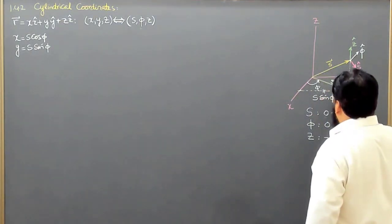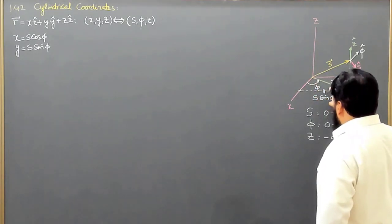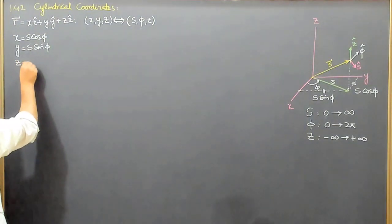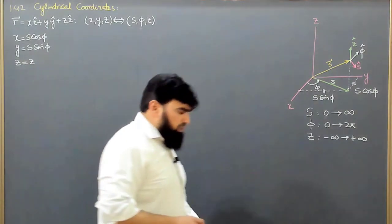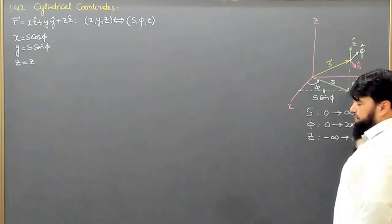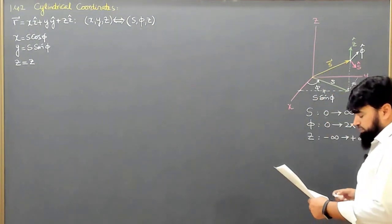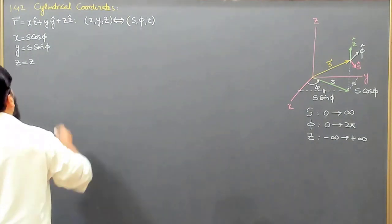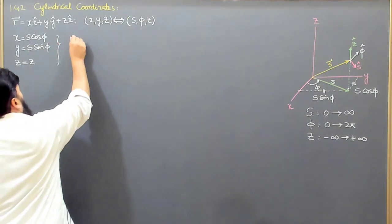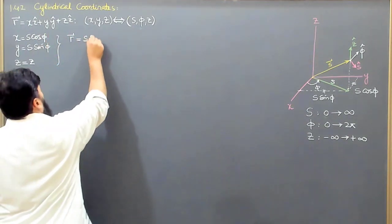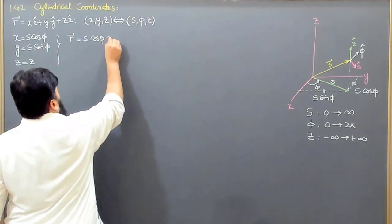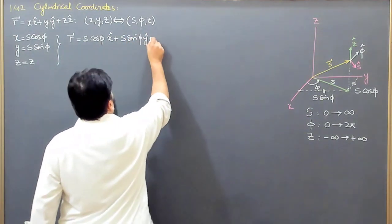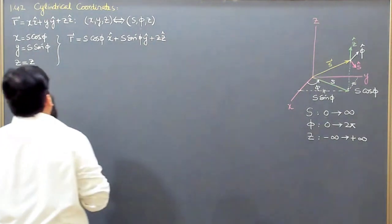The S vector lies in the xy plane, so it has no Z component. The Z component remains as it is, because we raise the circle up along Z after it is formed on the xy plane. Based on this, I can write the position vector R as: R = S cos(phi) x-hat + S sin(phi) y-hat + Z z-hat. So R is written in terms of x, y, and z from this simple diagram.